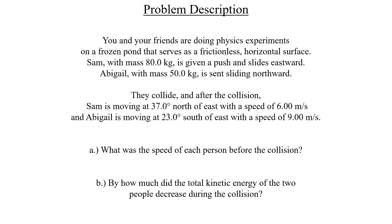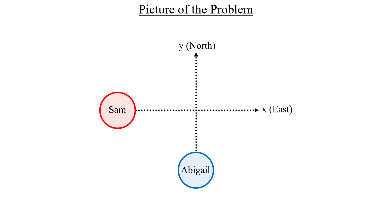Here we have two friends, Sam and Abigail, who are going to collide on the surface of a frozen pond. We'll position them like this and call the x-direction east and the y-direction north. Before they collide, Sam is pushed purely towards the east and Abigail purely towards the north.